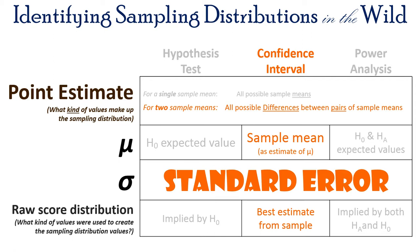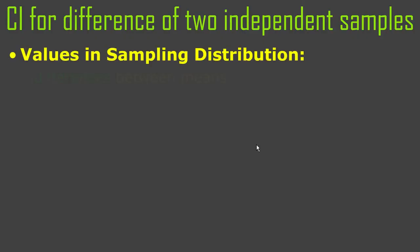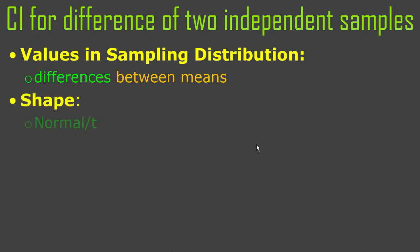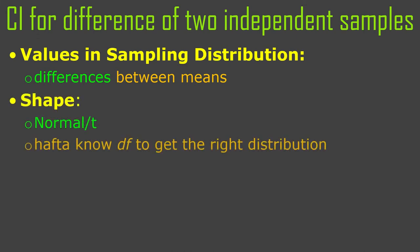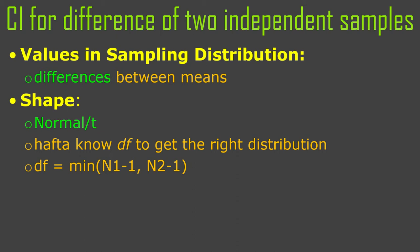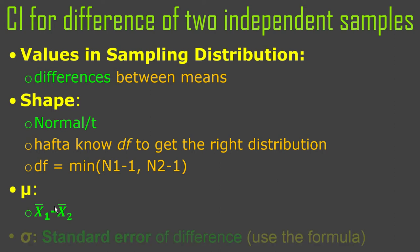So for confidence intervals for two sample means, the point estimate — every value in that distribution is a possible difference between pairs of sample means from population one and population two. The mean of that distribution is actually the difference between our two sample means. So it's a population of all possible differences and the mean of that population is the difference that we happen to find. Standard error is the same as for a null hypothesis or power analysis — it's just the standard error of the difference between means. The degrees of freedom are the same as for a t-test, because the degrees of freedom aren't really for the t-test, they're for the sampling distribution. And our sample statistic is a difference between means.